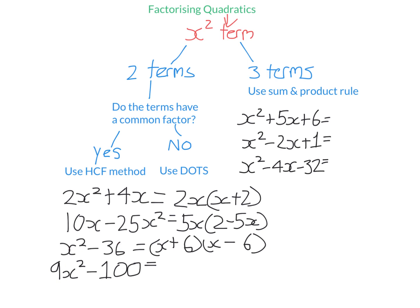Let's look at the last difference of two squares example: 9X squared minus 100. There are no common factors — no number other than one goes into 9 and 100, and not both terms have an X. So we use difference of two squares. We set up two brackets. Square root the first: square root of 9 is 3, square root of X squared is X, giving 3X. Square root the second: square root of 100 is 10. One bracket gets a minus, one gets a plus — order doesn't matter. So we get (3X + 10)(3X − 10).